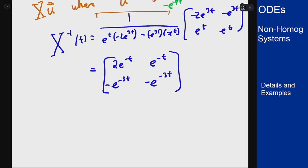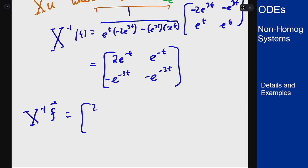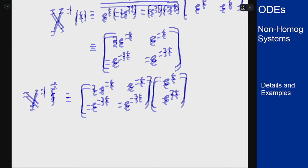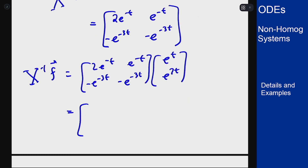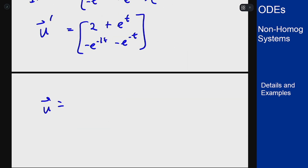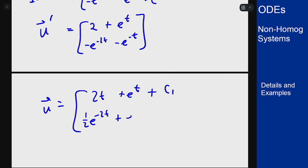Then X inverse times f — the matrix times [e to the t, e to the 2t] — gives: 2e to the minus t times e to the t is 2, e to the minus t times e to the 2t is e to the t; and e to the minus 3t times e to the t is e to the minus 2t, e to the minus 3t times e to the 2t is e to the minus t. Integrating u' gives u = [2t + e to the t + c1, (1/2)e to the minus 2t + e to the minus t + c2].